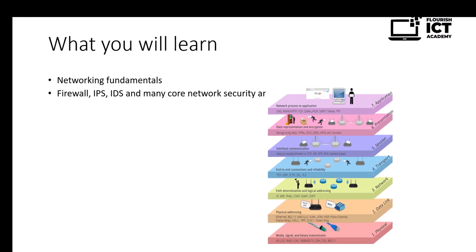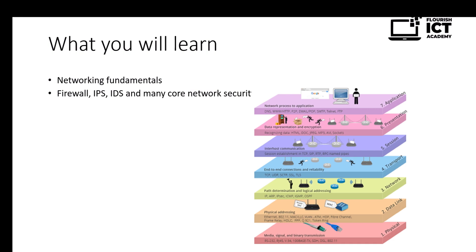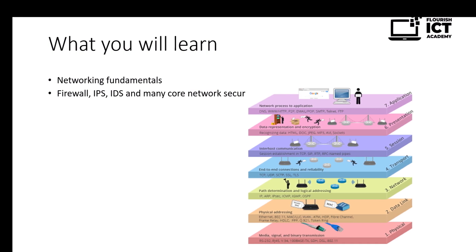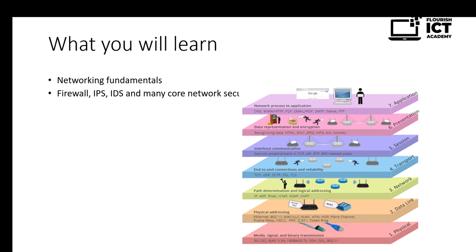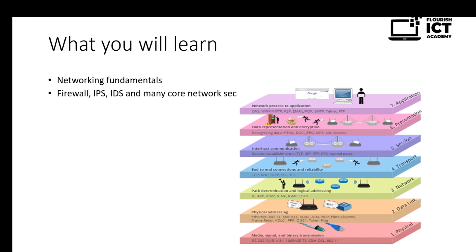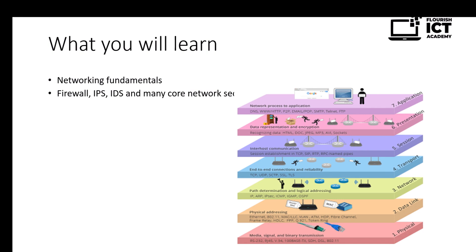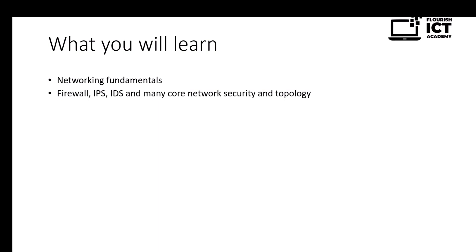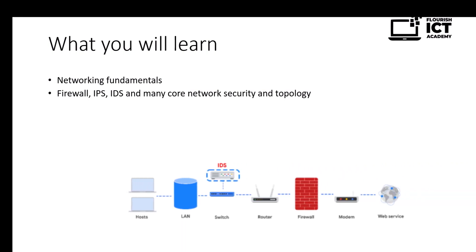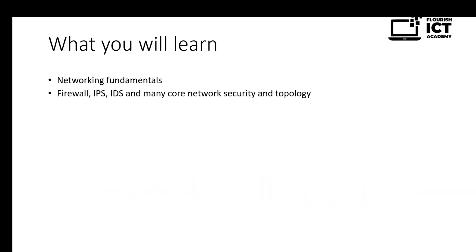You will be understanding protocols and how communications are done on the network. For example, if you send an email from your device and you are sending it to somebody outside, how does it get to America, the UK, or the destination — just within the blink of an eye? We need to look at how communications are done on the network, and also where hackers and bad actors will actually operate. We'll be talking about network topology, the firewall, IP address, IDS, and many core network security topics. I don't want any of these to scare you — they are very simple to understand.